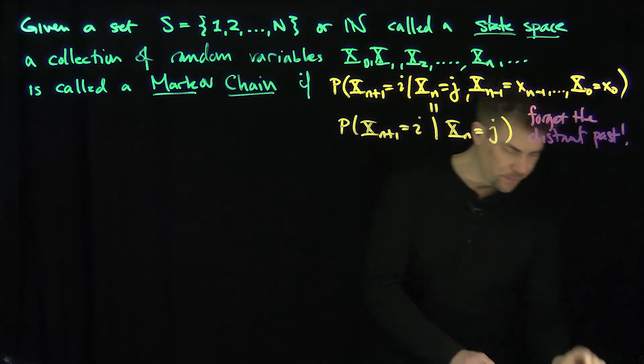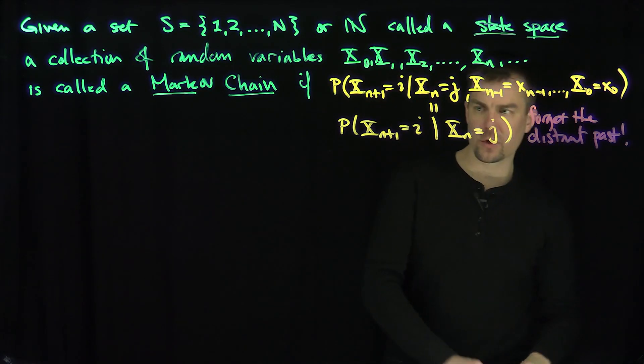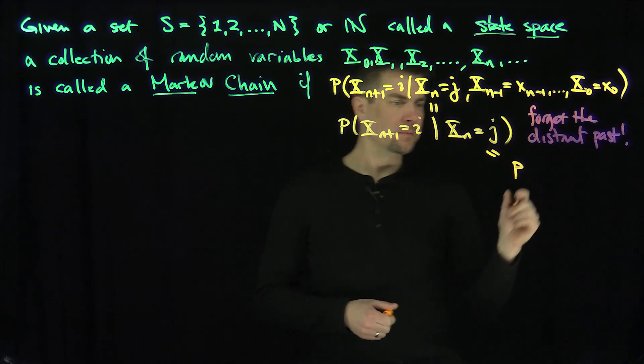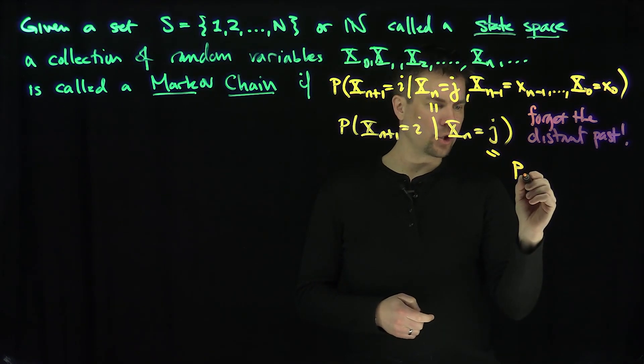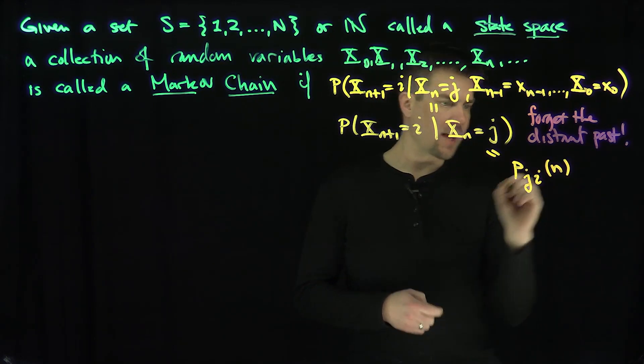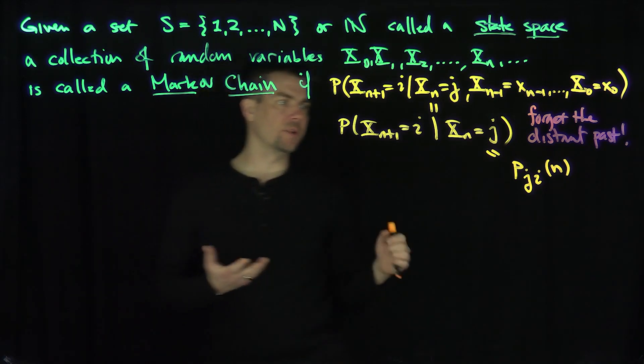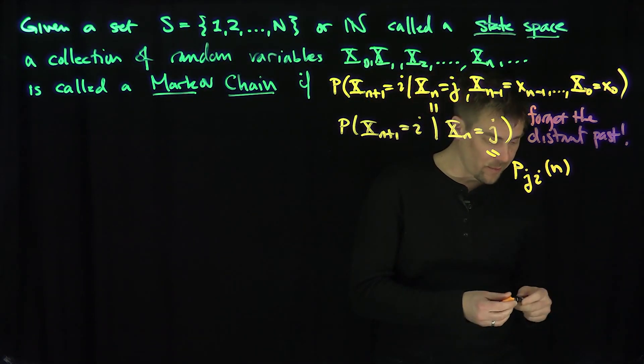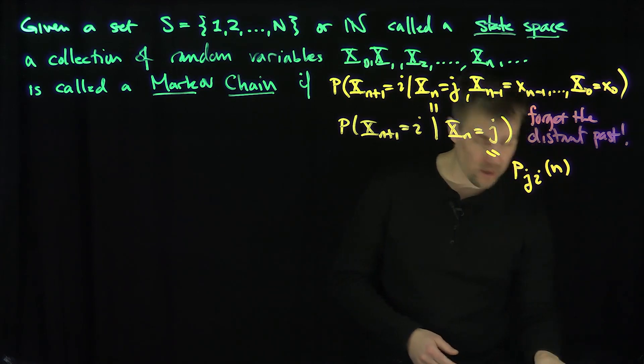And we'll build some notation for this. We're going to say that this is p, I go from j to i, so I start at j and I go to i at starting at step n. In principle this could depend on n, but a very common case is when this is independent of n. We're going to talk about those called time homogeneous Markov chains.